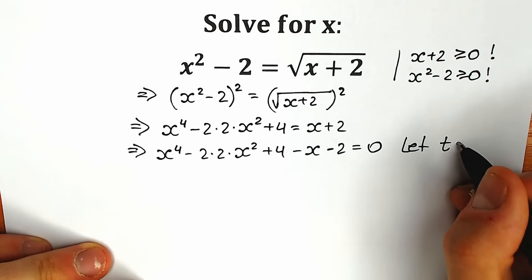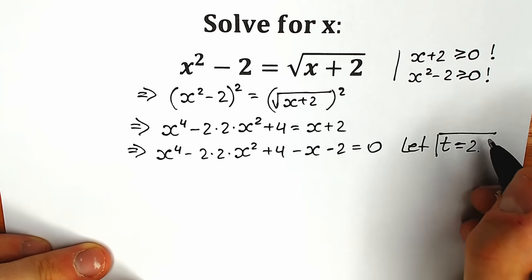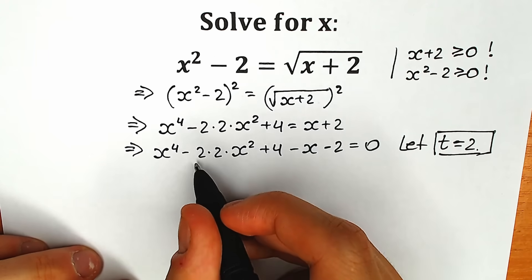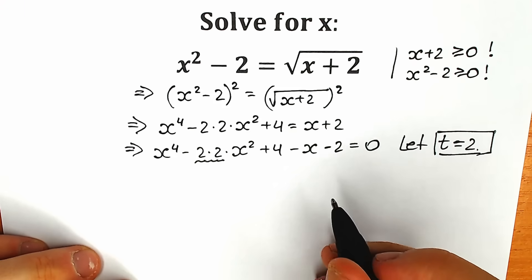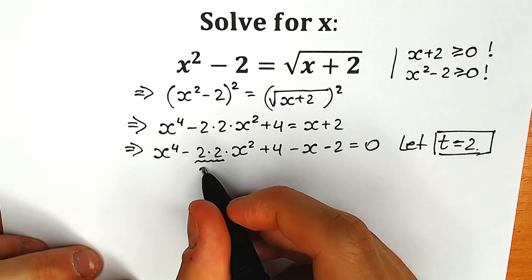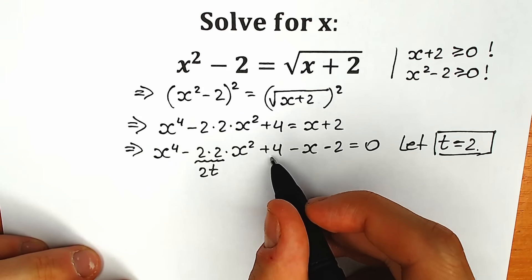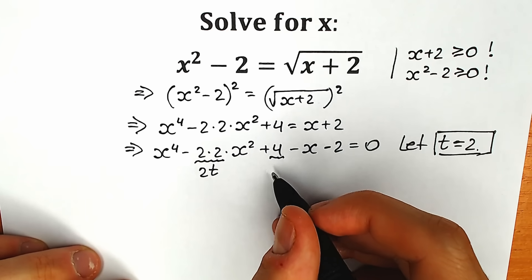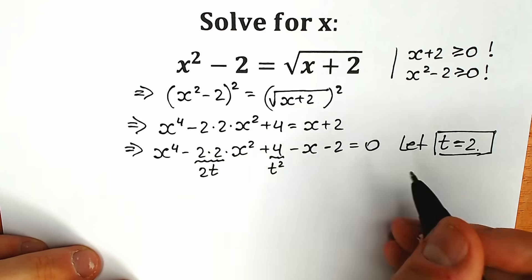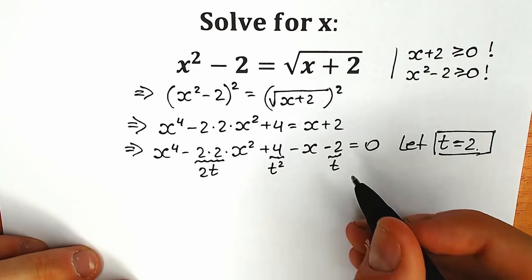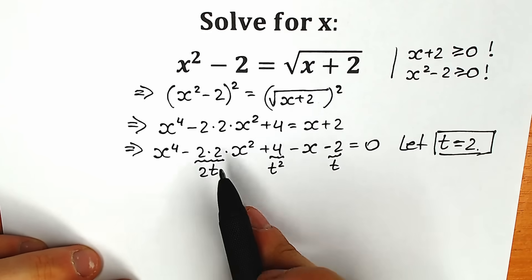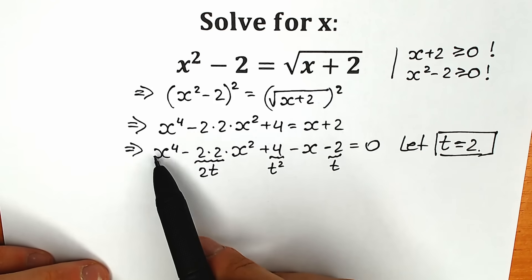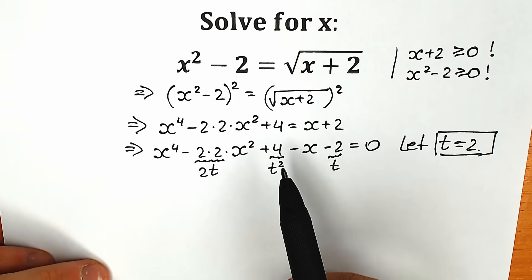Let t equal to 2. This is not the common substitution, but it helps us a lot. We're going to change the constants according to this substitution, not the variable x. So 4 becomes 2t, the value 4 alone becomes t squared, and the value 2 alone becomes t. I hope you understand — I'm changing constants according to the substitution. This is an extremely clever technique.